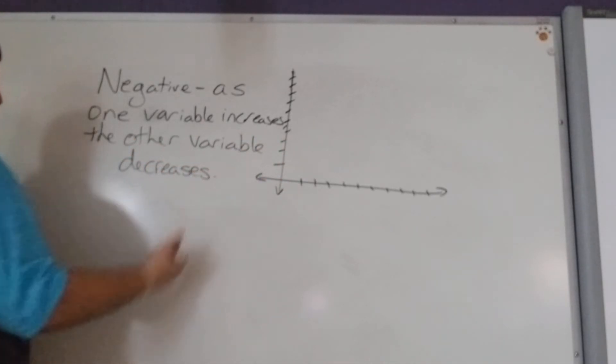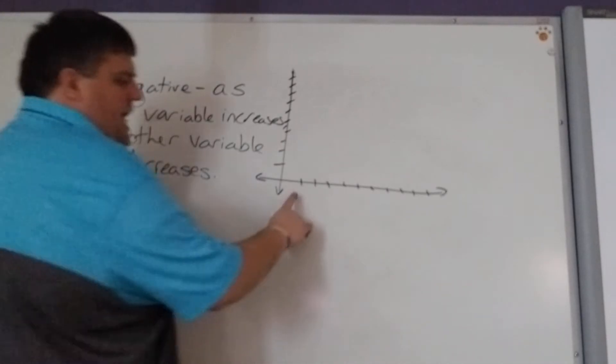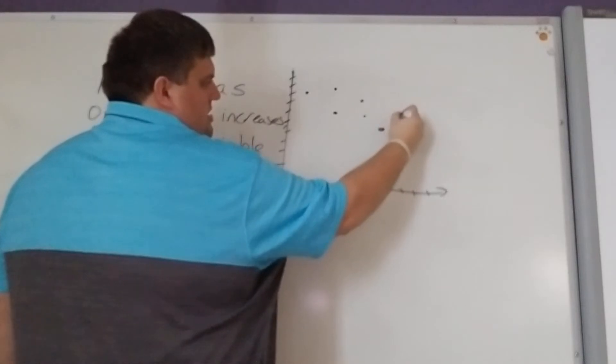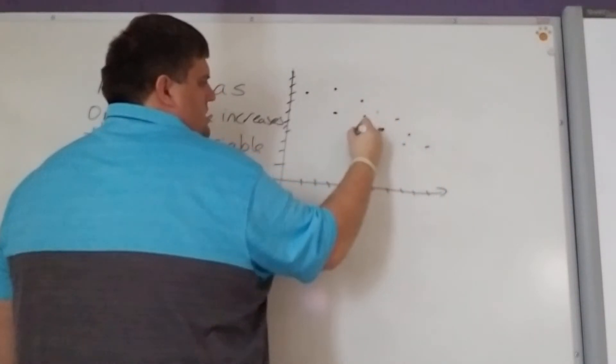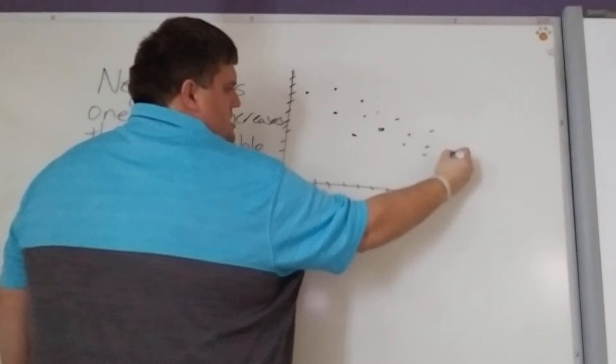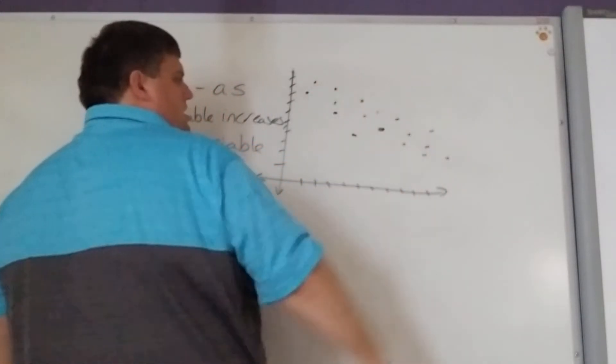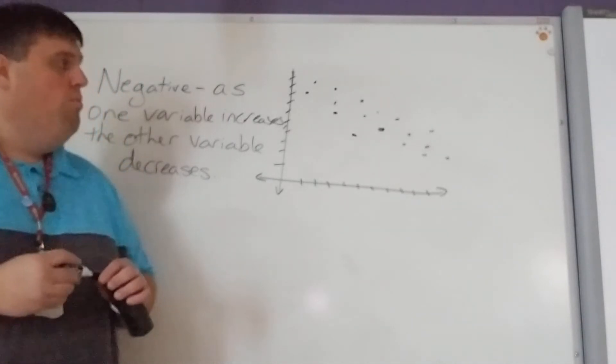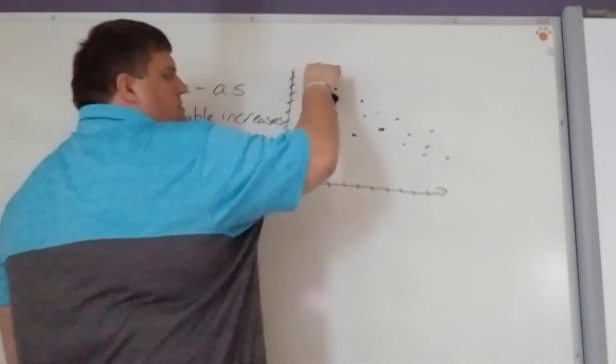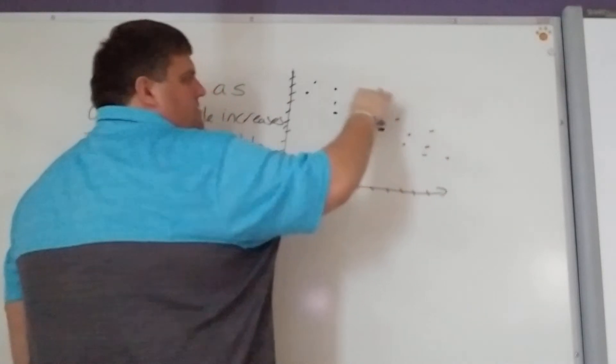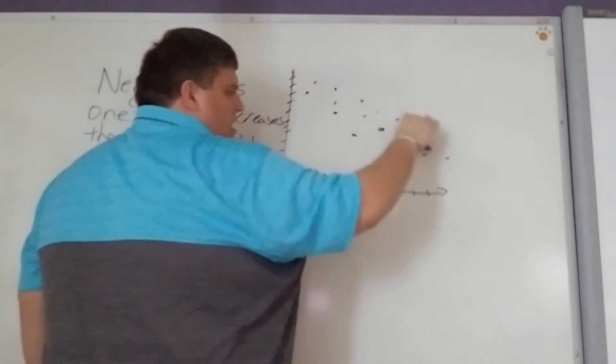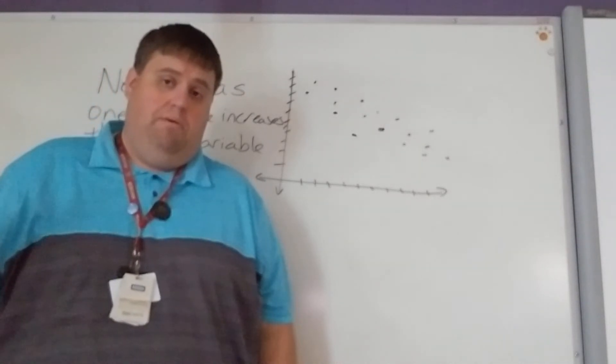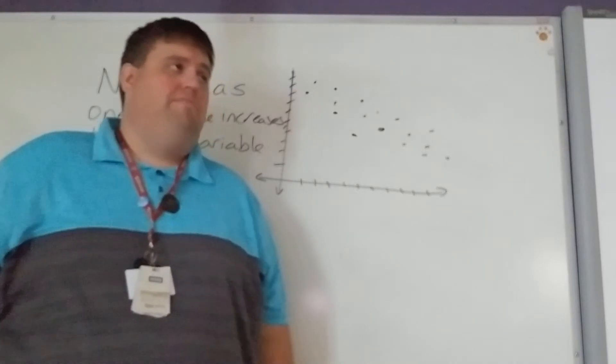So this time, as one goes up, maybe the x's increase, the y's will decrease. Like that. That would be a negative relationship. And again, we can see that if I connected these with a line, that line would have a negative slope. So therefore, we know it's going to have a negative relationship because the line is decreasing as it goes from left to right.